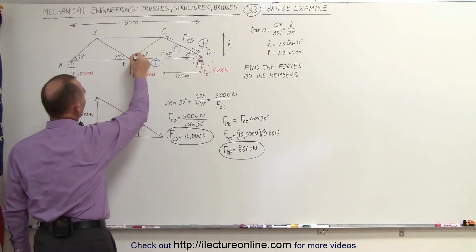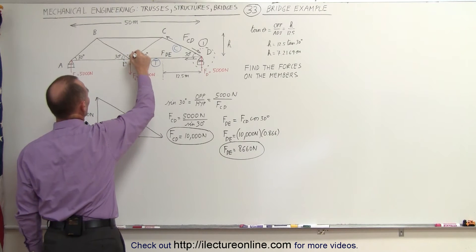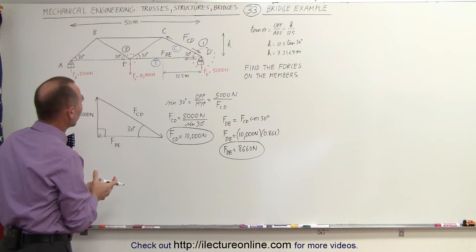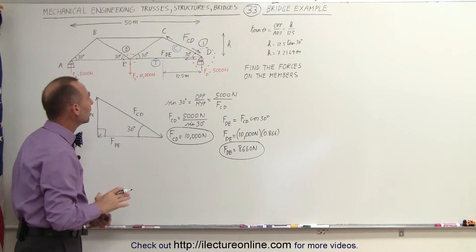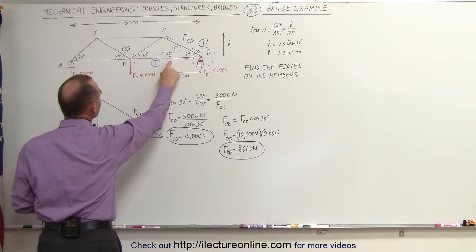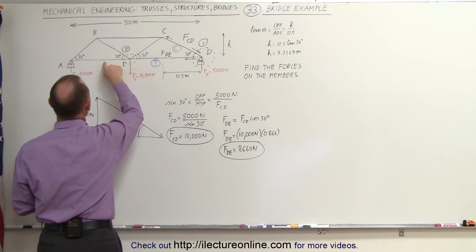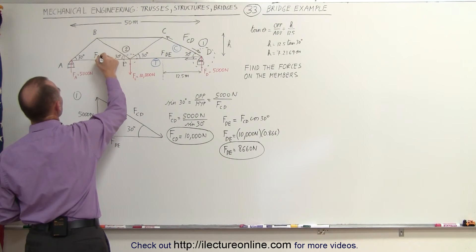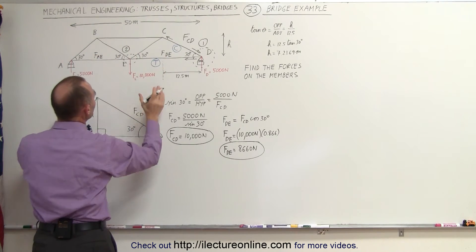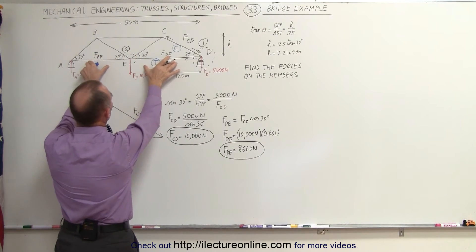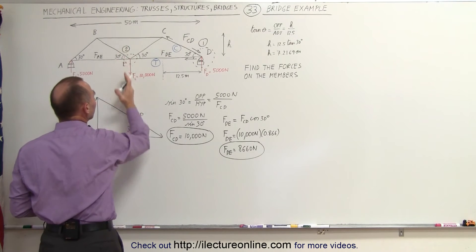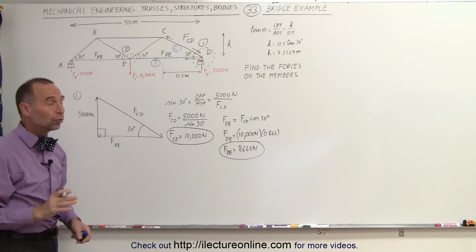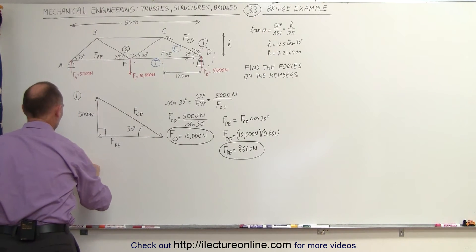Now let's go to joint number two and add up all the forces there. Since I already know FDE, and there's perfect symmetry, force FAE must be exactly equal to force DE — so I know both of those forces. Let's look at only the forces in the y-direction on joint number two.